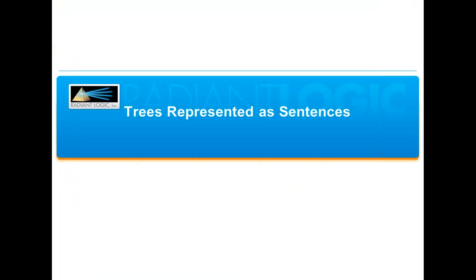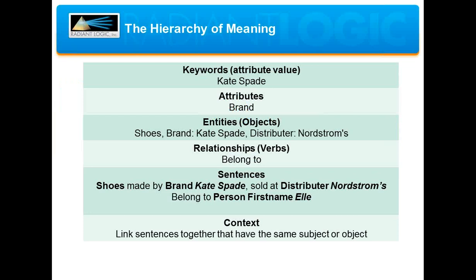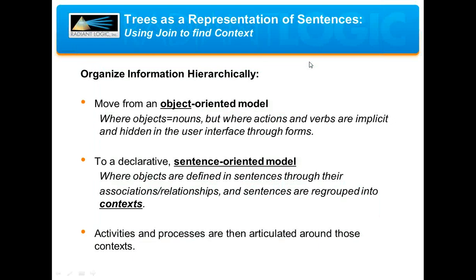Behind the scenes, data is incomprehensible to anyone outside of the individual system administrator or application developer. Linking these systems together and making them easy to understand has been the exclusive domain of heavy application integration. So how do we achieve it? At its lowest level, a keyword is the starting point for any search — for example, 'Kate Spade' relates to the attribute qualifier 'brand.' The object that relates to brand 'Kate Spade' is a pair of shoes. We can tag a verb to describe the relationship of those shoes with another object, such as 'belong to,' which creates a complete sentence. Context is the linking together of several of these sentences where a subject matches another subject or object.